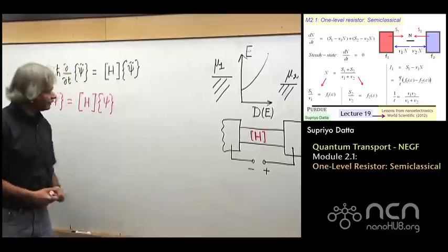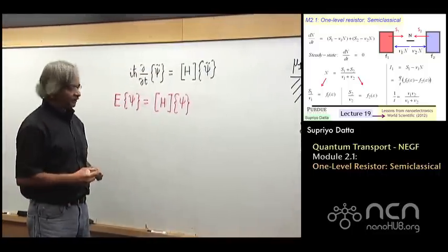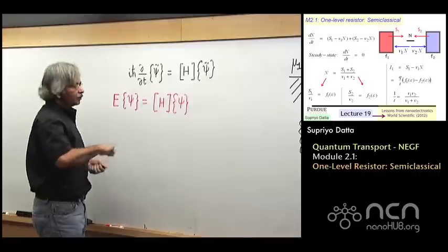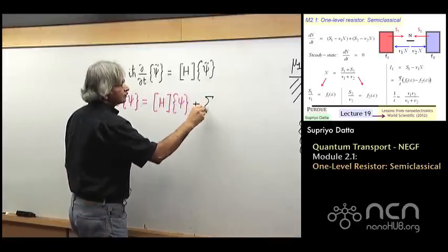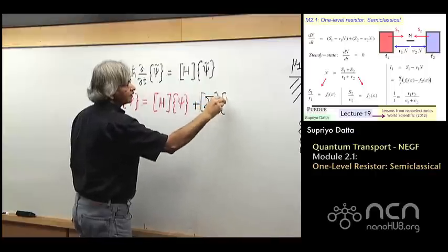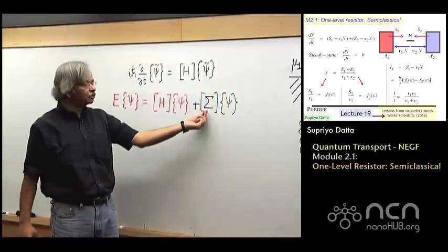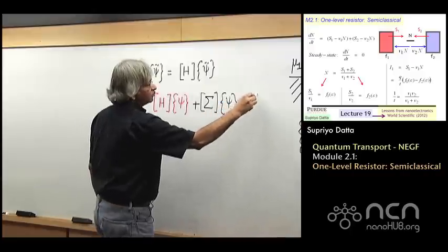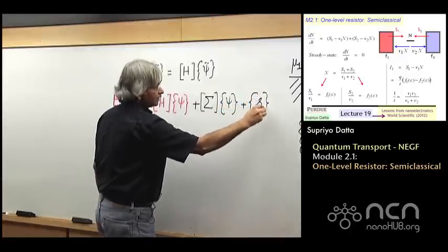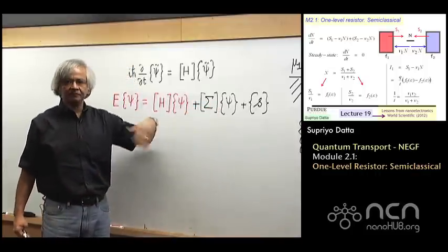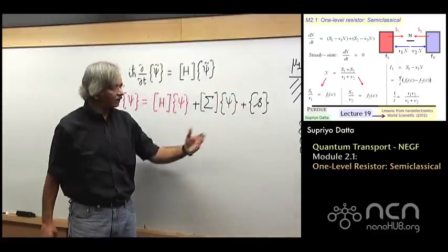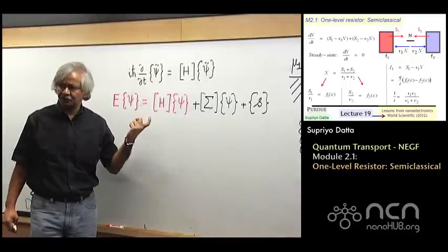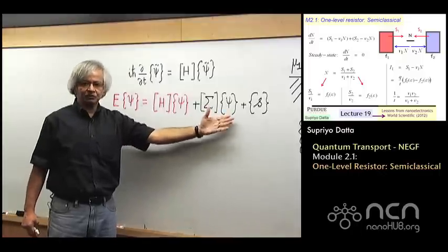And the first step in that is, this is what we'll be discussing in the next, this module and the next, is that to the standard Schrödinger equation, if you include these contacts, what you get is two extra terms here, something that we'll call the sigma psi, and as you'll see, the sigma has two components, like sigma 1 and sigma 2, one due to contact 1, one due to contact 2. And then there will be another term, which is like this source term. And that describes how electrons come in from the contacts into the device. And in principle, you could have an S1 and an S2 from the two contacts. So the first couple of modules in this week then, what I'll try to explain is how the standard Schrödinger equation gets modified into this one.